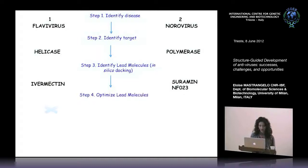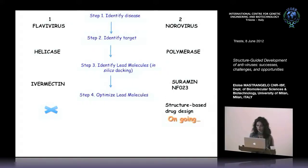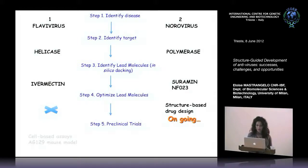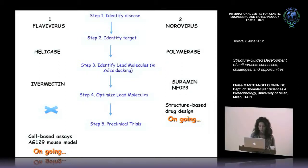In the case of ivermectin, because it is already a drug used in humans, we are now thinking to optimize this molecule. In contrast, for suramine and NF23, we are trying to modify and optimize these molecules. We also have some preclinical trials on cell-based assays, and we are starting in vivo studies on the AG129 mouse model for dengue virus.